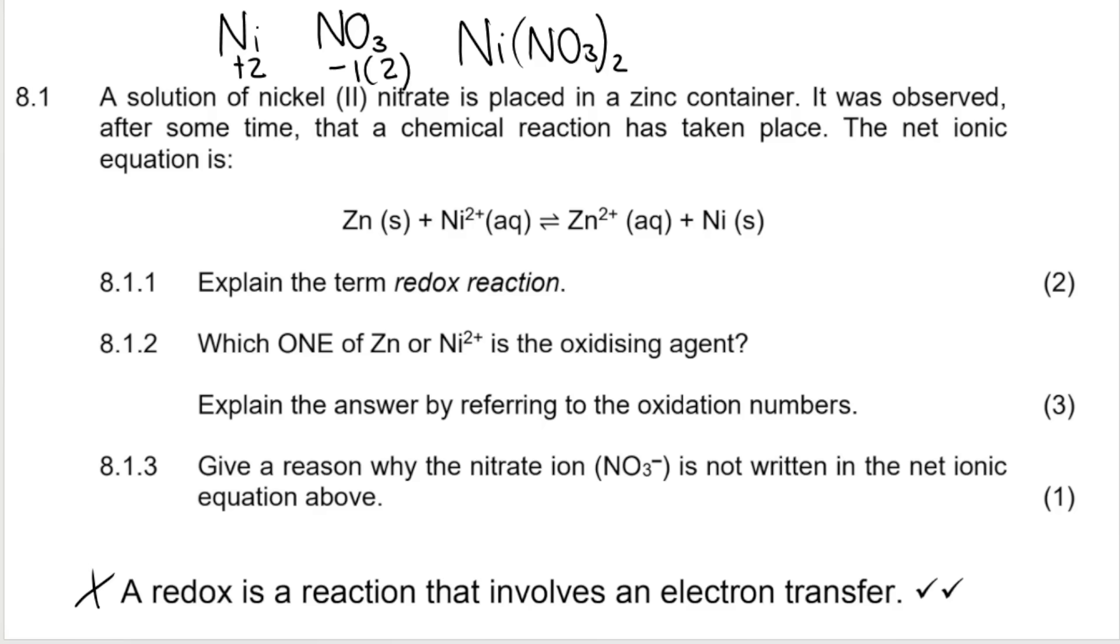Here's our answer. A redox reaction is a reaction that involves an electron transfer. Just for a quick recap, remember it's OIL RIG. Oxidation is loss of electrons. Reduction is gain of electrons. So we're transferring electrons.